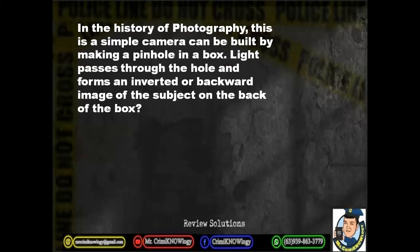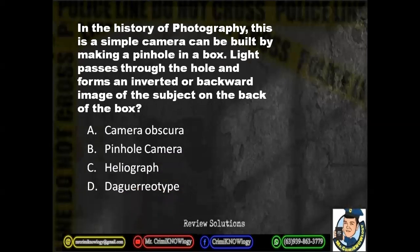In the history of photography, this is a simple camera that can be built by making a pinhole in a box. Light passes through the hole and forms an inverted or backward image of the subject on the back of the box. A. Camera obscura. B. Pinhole camera. C. Heliograph. D. Daguerreotype.